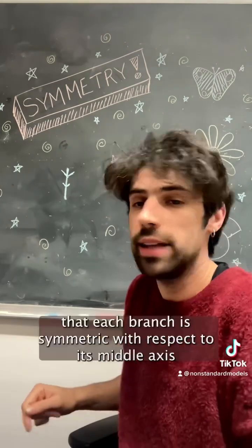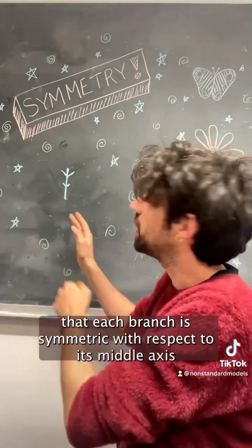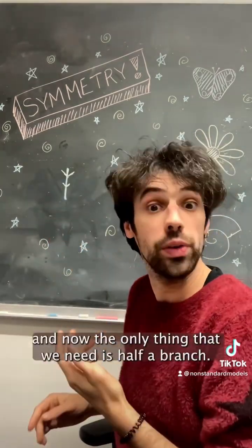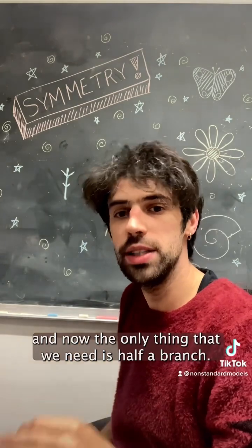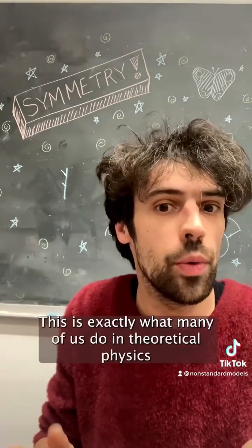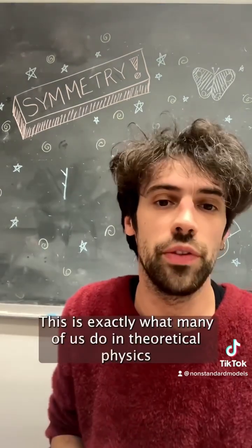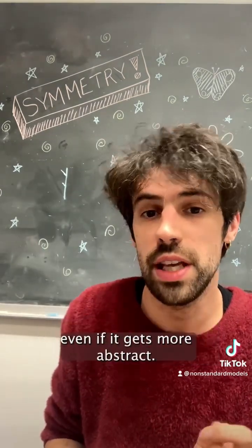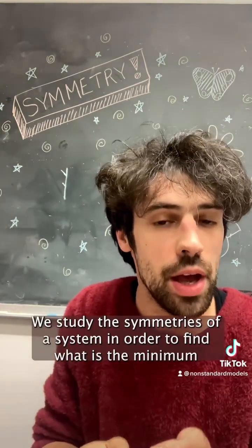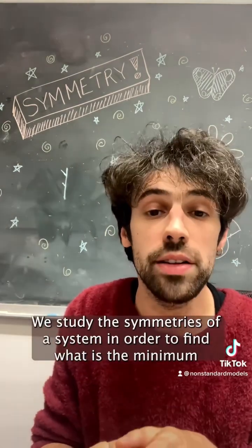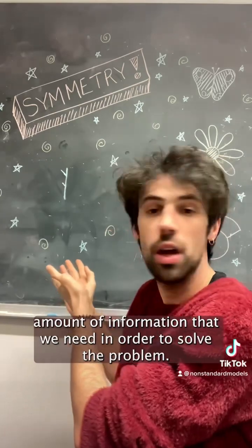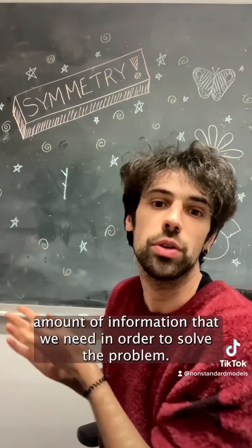And then we can state that each branch is symmetric with respect to its middle axis, and now the only thing that we need is half a branch. This is exactly what many of us do in theoretical physics, even if it gets more abstract. We study the symmetries of a system in order to find what is the minimum amount of information that we need in order to solve the problem.